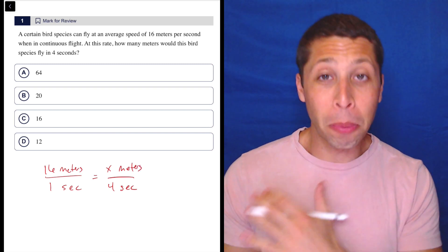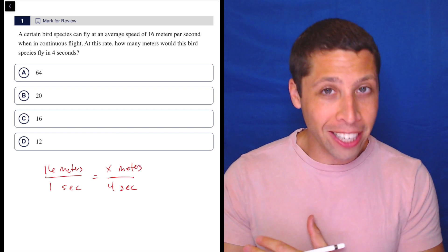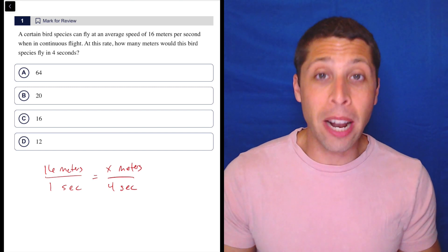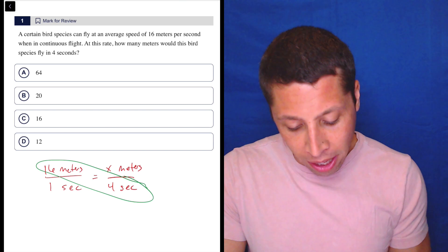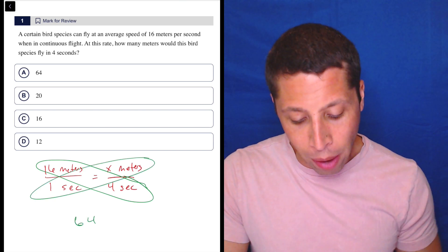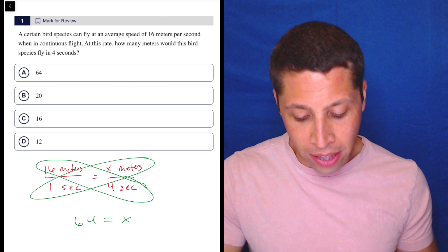Many of you probably already know you're just going to multiply 16 times four, and that will get you the answer. But here we have the setup that proves we would cross multiply: four times 16 is 64, and that equals x times one, which is x.